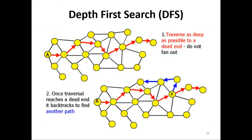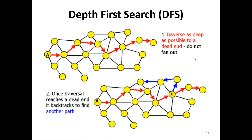This graph represents the depth first search. The depth first search traverses as deep as possible until you reach a dead end. Looking at the graph, starting from the starting point, it traverses as deeply as possible until it reaches the deepest node. Only when you reach the deepest node do you backtrack to find another path to follow. The depth first search principle does not fan out, but traverses as deeply as possible.